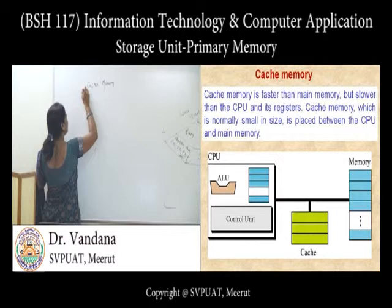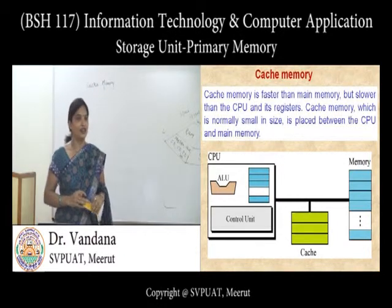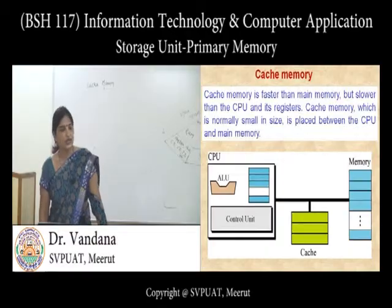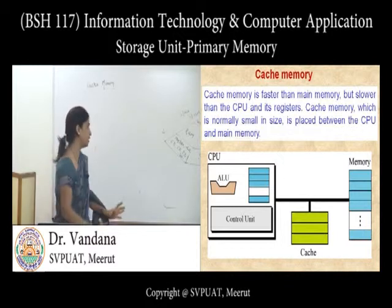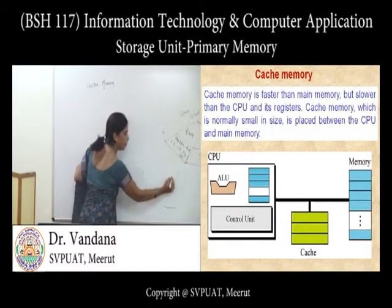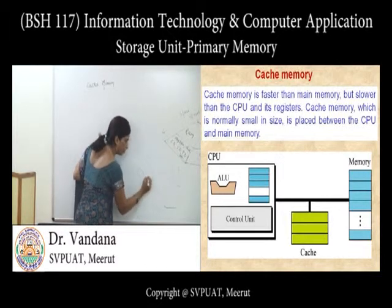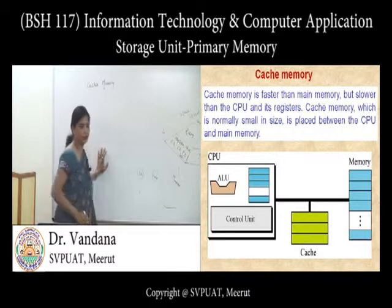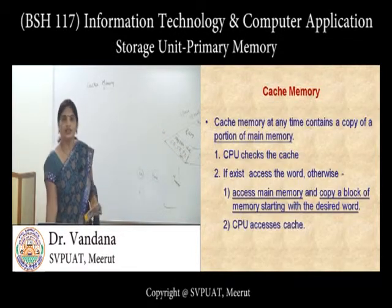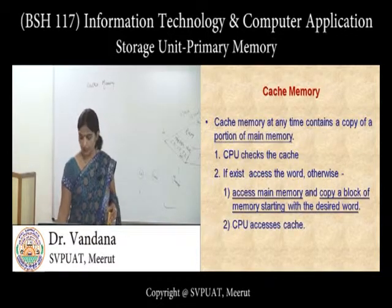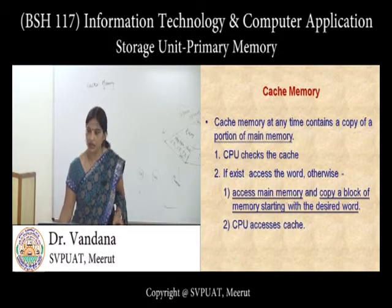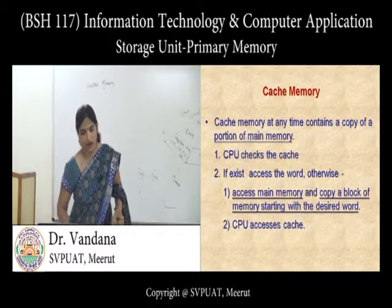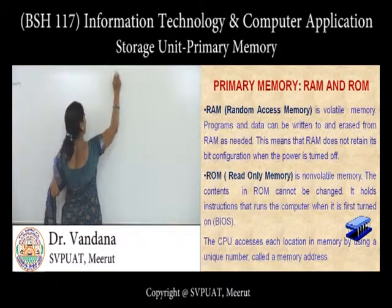Now, coming to cache memory — cache can be thought of as 'cache in hand.' Cache memory is the fastest memory after registers; it is slower than CPU registers. Cache is small in size and is placed between the CPU and main memory. When data is to be accessed, it is first checked in cache memory. If found, we get a cache hit; otherwise, data is searched in main memory and then loaded into cache.